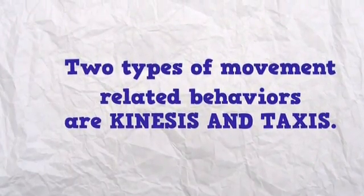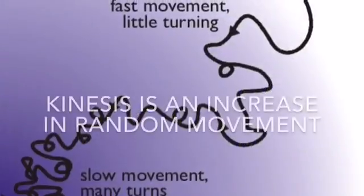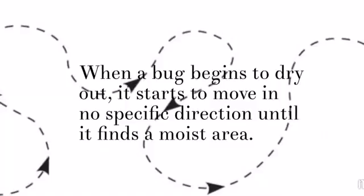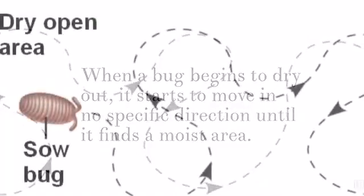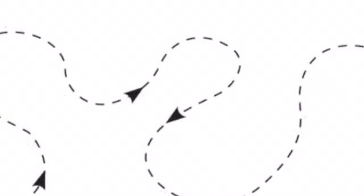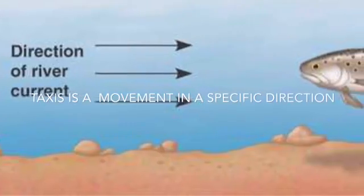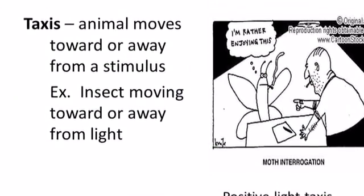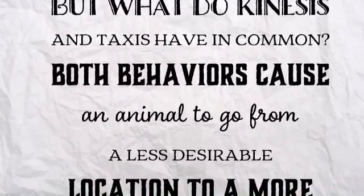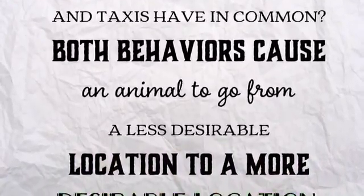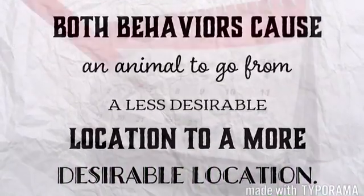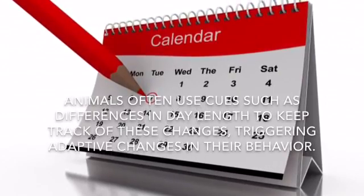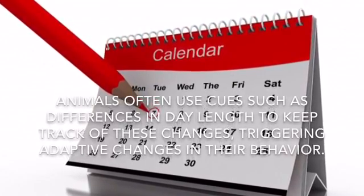The two types of movement-related behaviors are kinesis and taxis. Kinesis is an increase in random movement. When a bug begins to dry out, it starts to move in no specific direction until it finds a moist area. Taxis is a movement in a specific direction; there exist positive and negative taxis. Both behaviors cause animals to go from a less desirable location to a more desirable location.